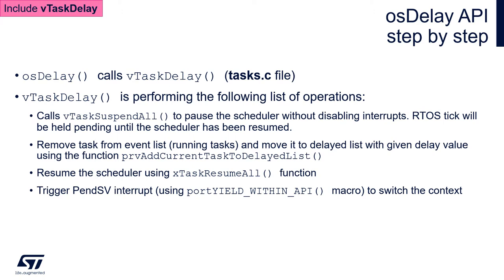It first calls the vTaskSuspendAll function, which freezes all the tasks — freezing the scheduler without disabling the hardware interrupts. So the RTOS tick will be stopped for a while and there will be no operations on other FreeRTOS components.